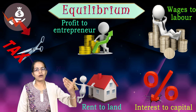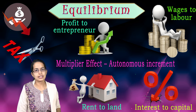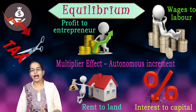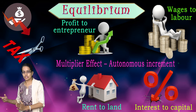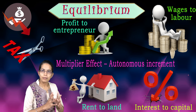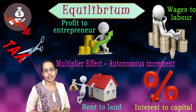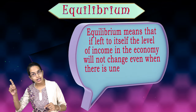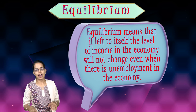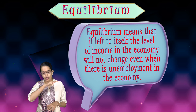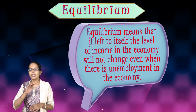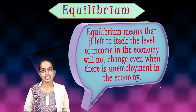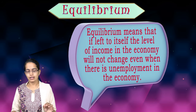The multiplier mechanism shows that with a change of 10 autonomous units, the change in equilibrium would be 50 units, and production factors going in would eventually affect output. With each round, there is an autonomous increment that compounds as a multiplier — the economy is left to its own level of income and the income level will not change even in unemployment situations.